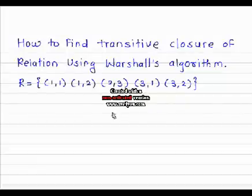In this session, we study how to find the transitive closure of a relation using Warshall's algorithm. Now for this example, R equals (1,1), (1,2), (2,3), (3,1), and (3,2). We want to find the transitive closure.